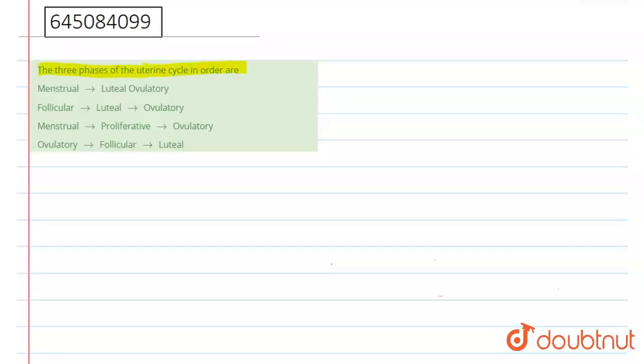First option: menstrual, second luteal, then ovulatory. Second option: first follicular, then ovulatory. Third option: menstrual, second proliferative, and third one is ovulatory. And the fourth option: ovulatory, then follicular, then luteal phase.